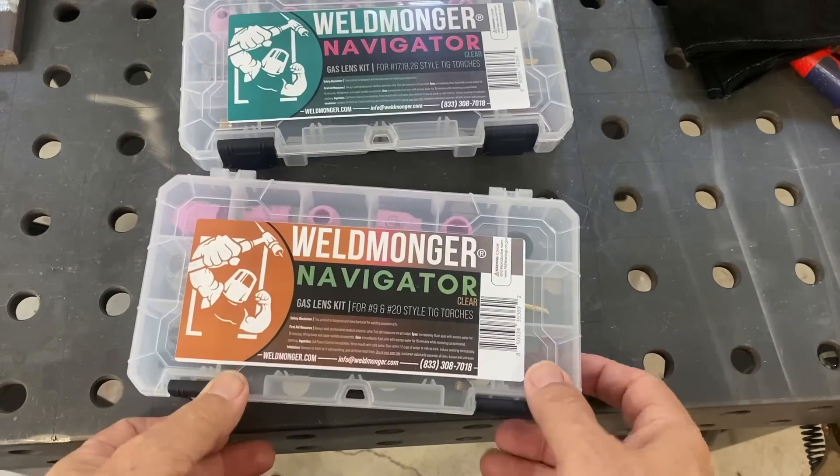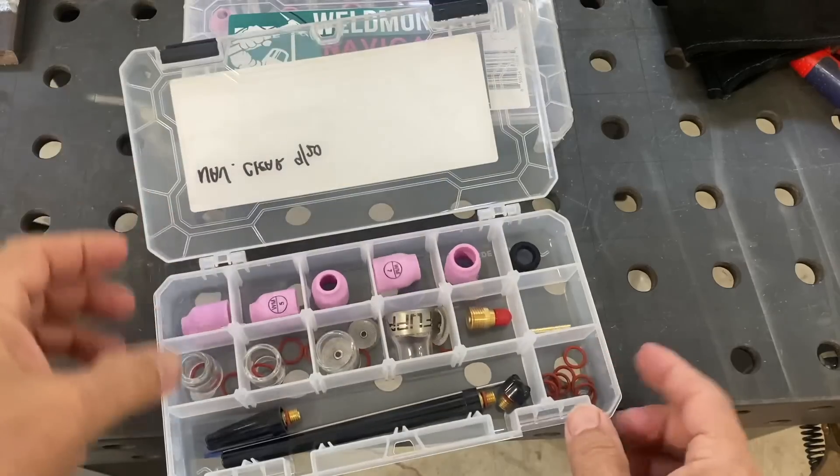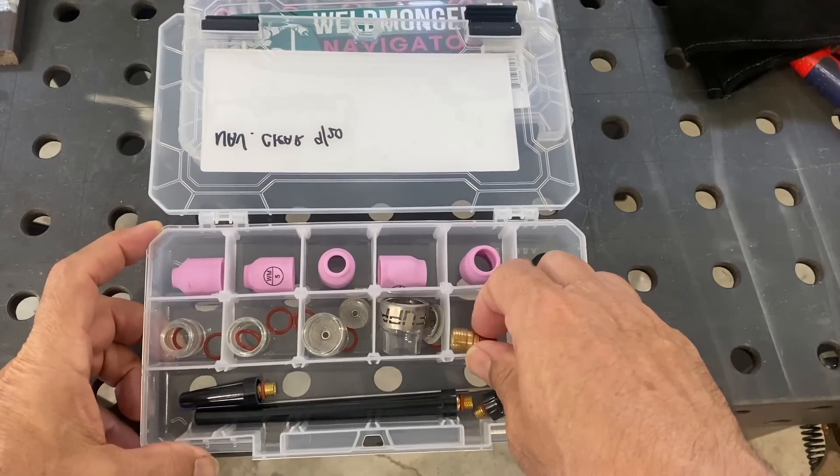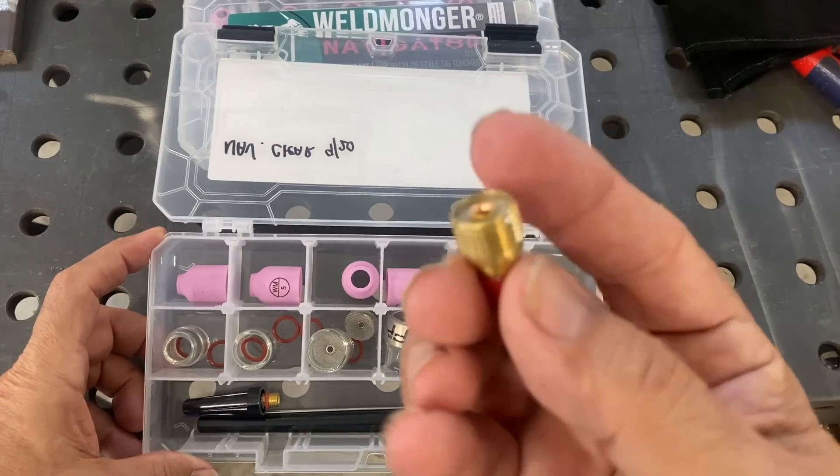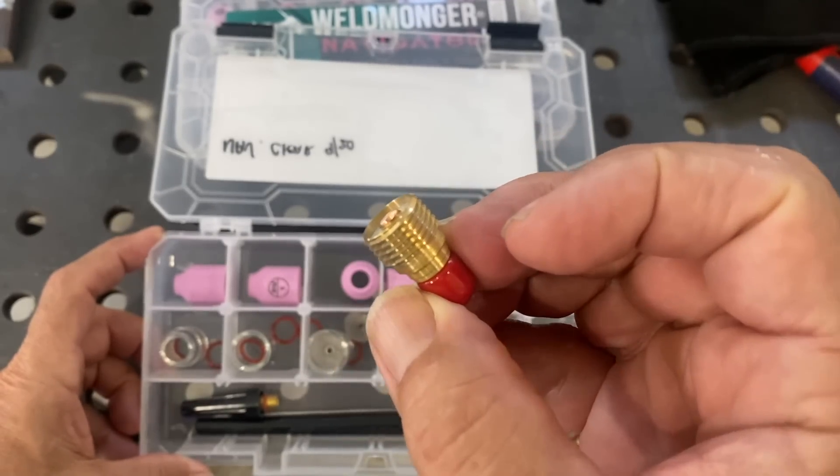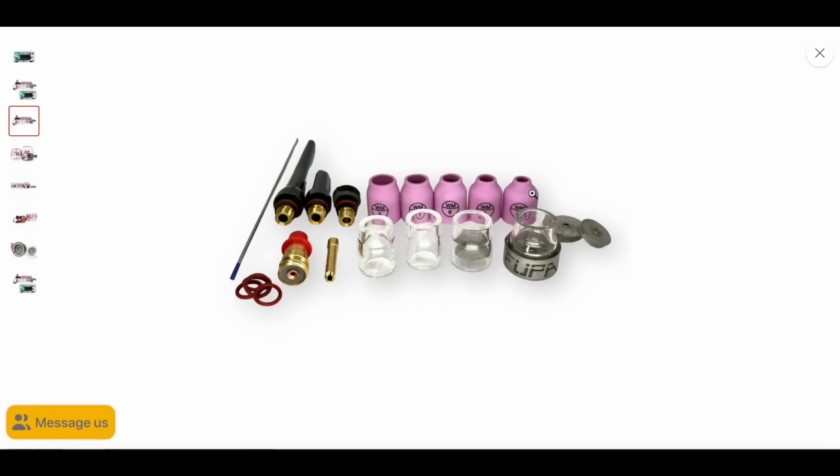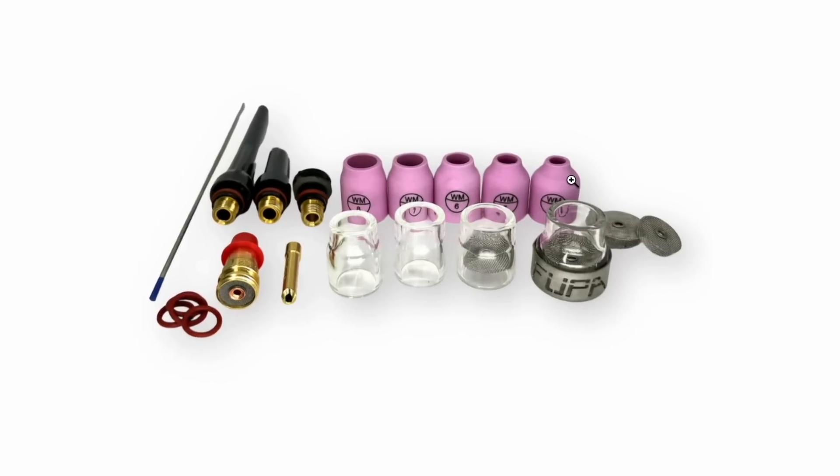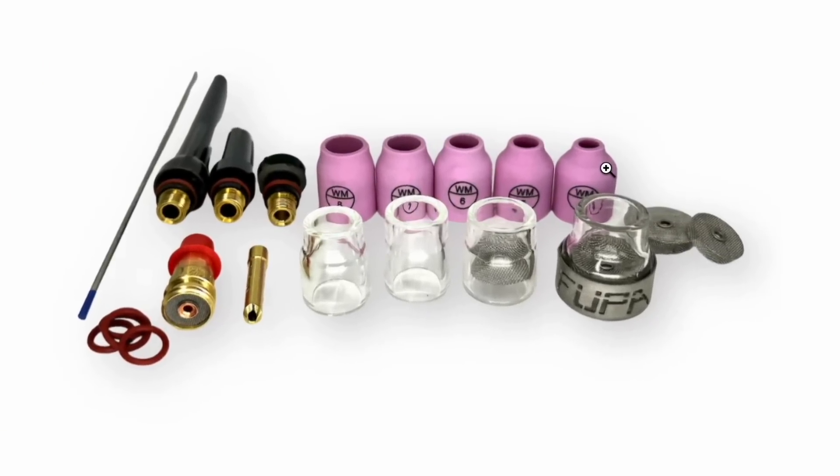The kit I just showed you was for 17, 18, and 26 style torches. It's got a Furick adapter kit inside of it. This is the 920 version. It has this regular 45V44 gas lens for 920 torches. The great thing about a kit is you know everything will fit your torch. You just have to identify which torch you have. We've got plenty of information on the store on how to do that.